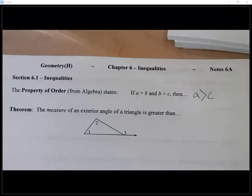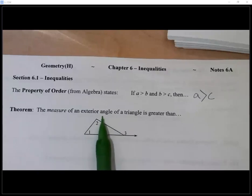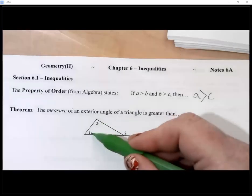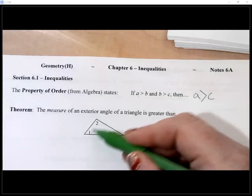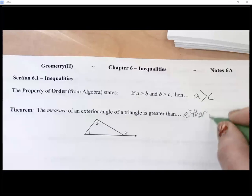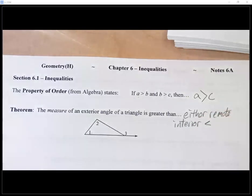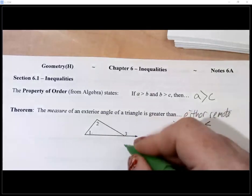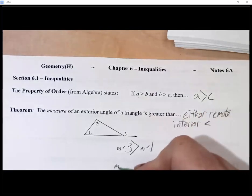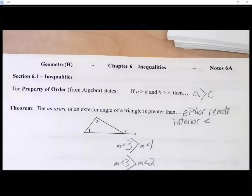Okay, so using that idea, we are going to tie this into our exterior angles here. So the measure of an exterior angle of a triangle is greater than, isn't it going to be greater than either one of these two remote interiors? Because isn't it true that the exterior angle is equal to the sum of these two things? So we can go ahead and say it will be greater than either remote interior angle.